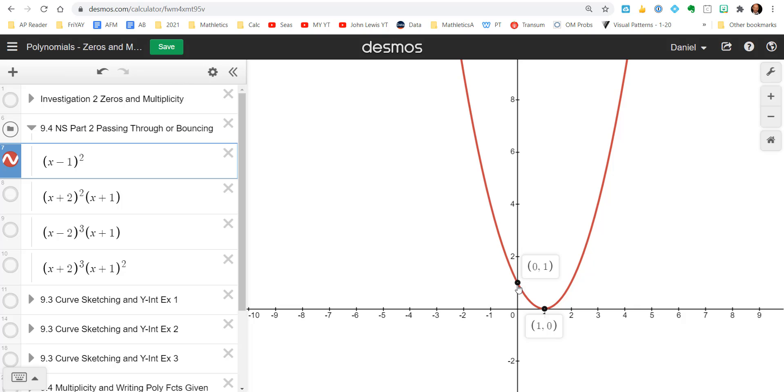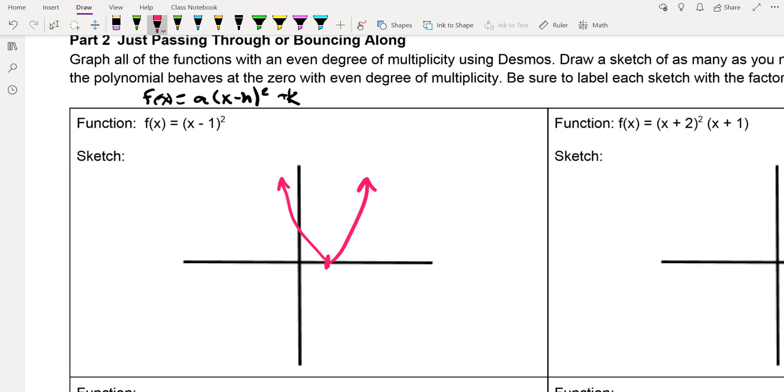So the next one we're going to take a look at. So that was even degree. That was even degree. So what we're really focusing on here is this number right here. And what happens with that zero on the x-axis?